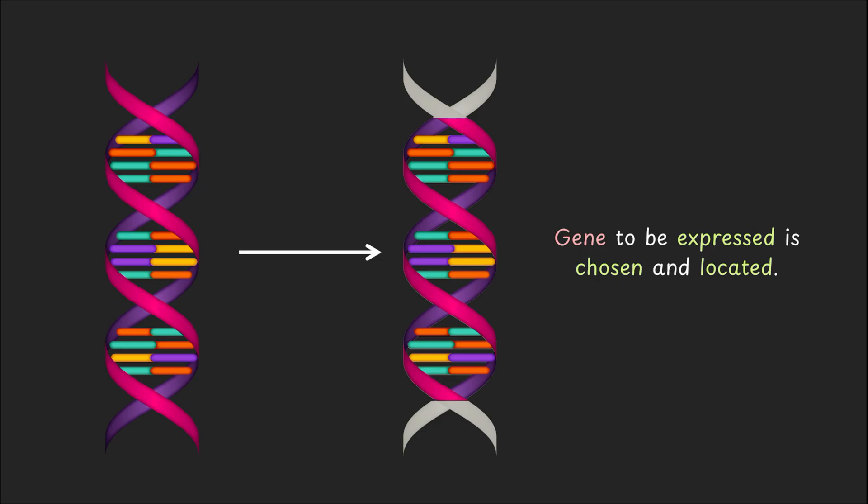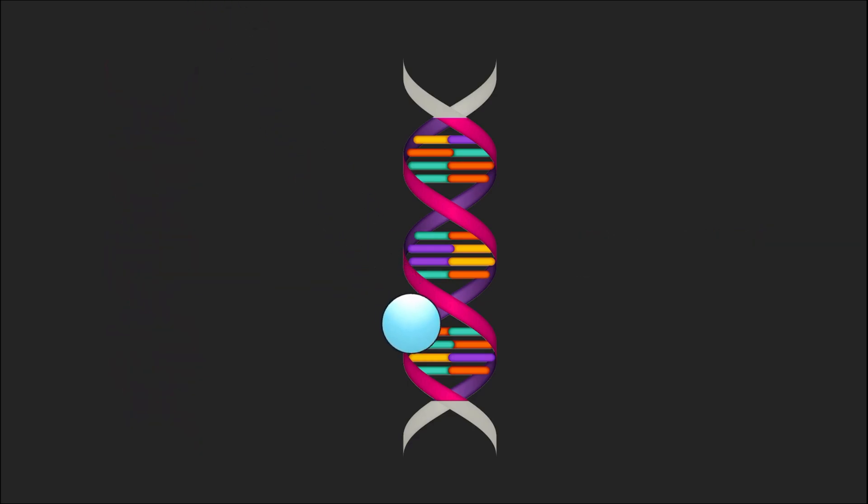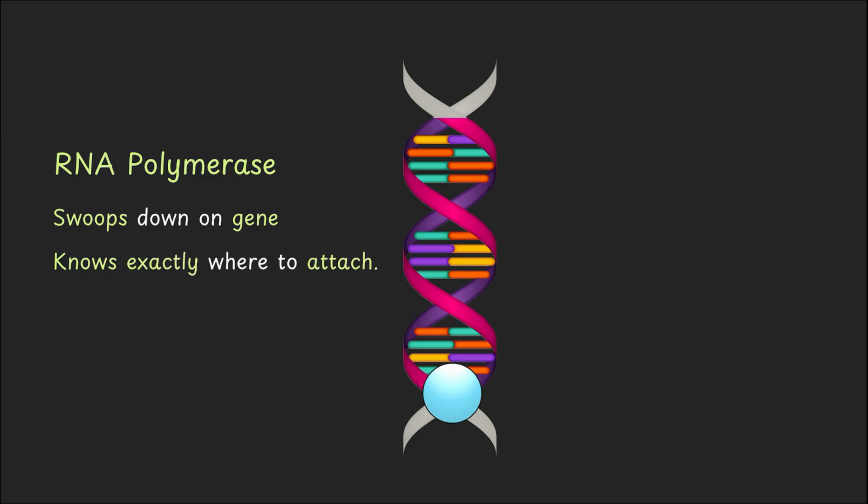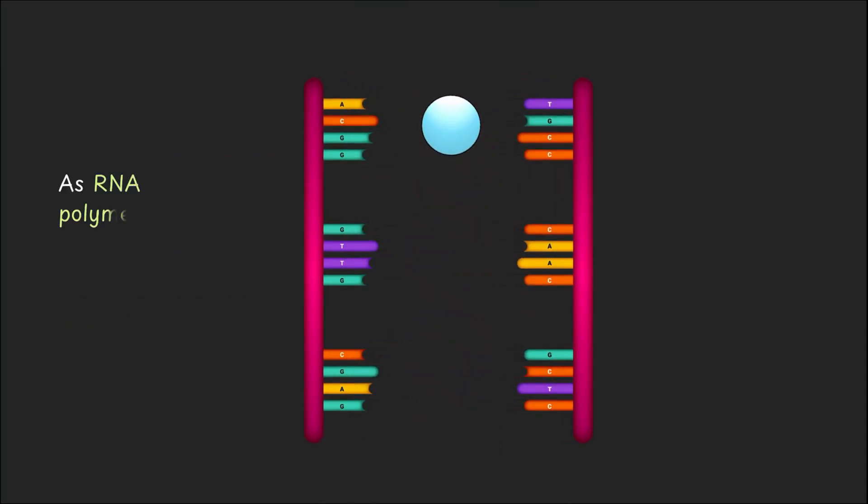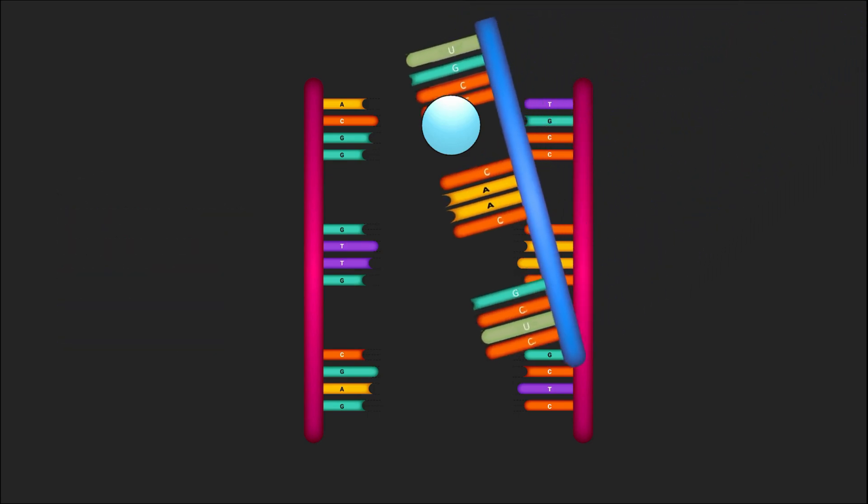And this is where the transcription superstar RNA polymerase arrives. RNA polymerase swoops down on the gene like an airplane approaching a runway. It knows exactly where to land on the DNA, thanks to additional proteins called transcription factors that help with this. Once docked, RNA polymerase travels along the gene and unzips it. And as it moves, it builds a complementary mRNA along the way.